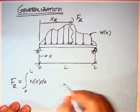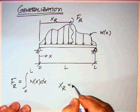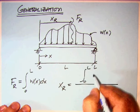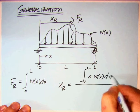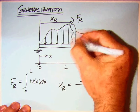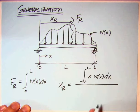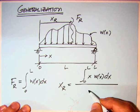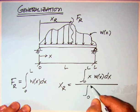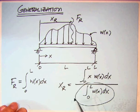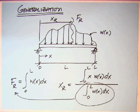And x sub r is defined as the integral from zero to L of x w(x) dx. So you're taking a little strip of that distributed load, w(x) times dx, and then you're multiplying by its location x. So you're getting an integral there, and then divide it by the total, which is the integral from zero to L w(x) dx. And this is our F sub r.